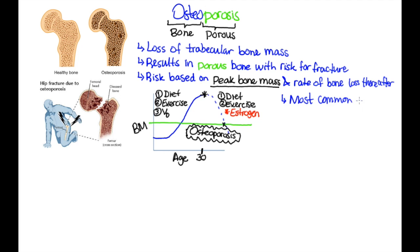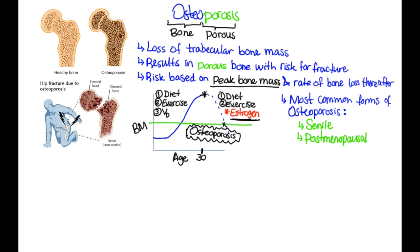The most common forms of osteoporosis are senile and post-menopausal. Basically, the longer you live, the more likely you are to cross that line. Estrogen helps to prevent the loss of bone; however, once it is lost after menopause, bone loss occurs more rapidly.